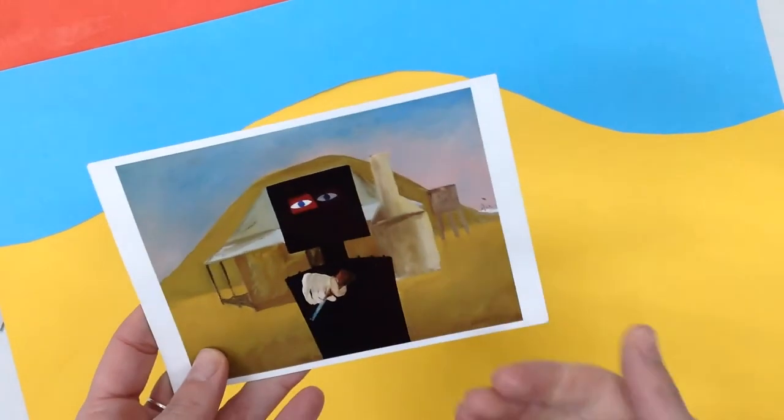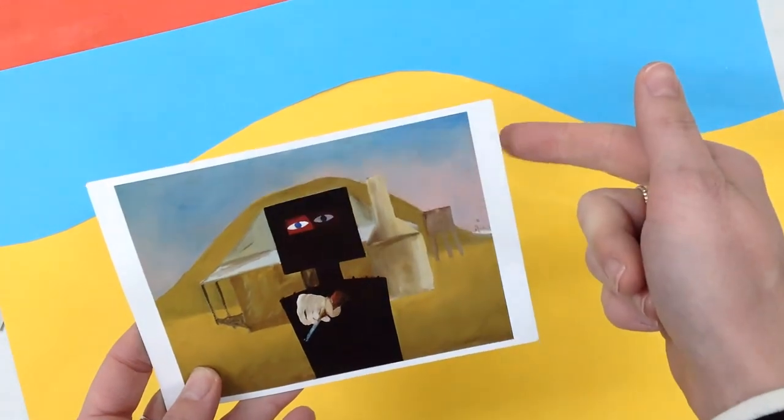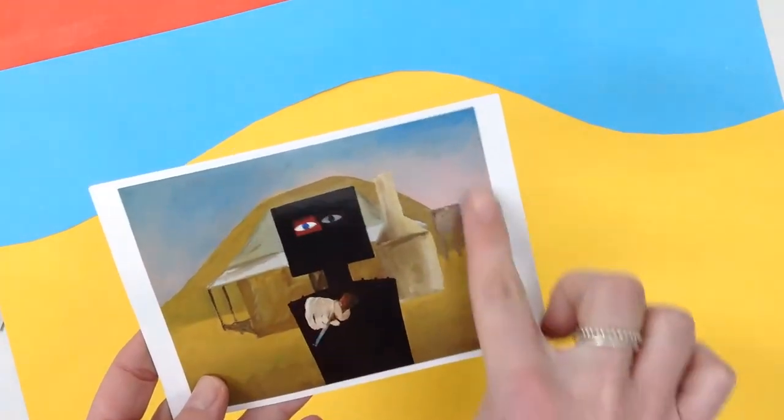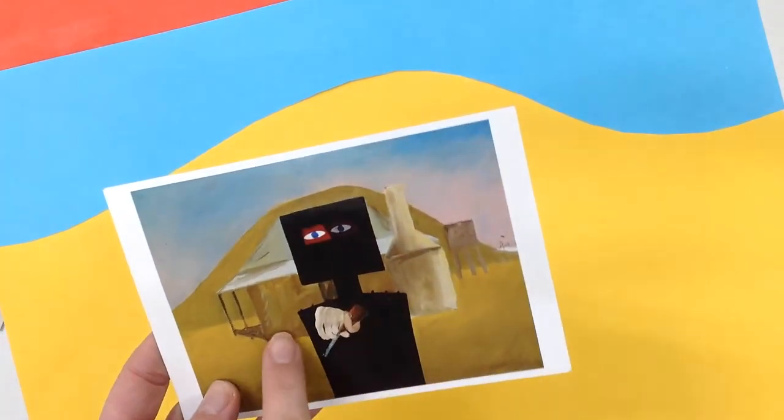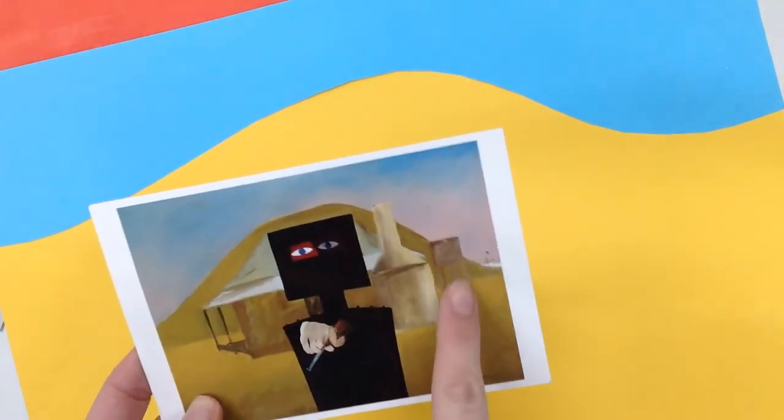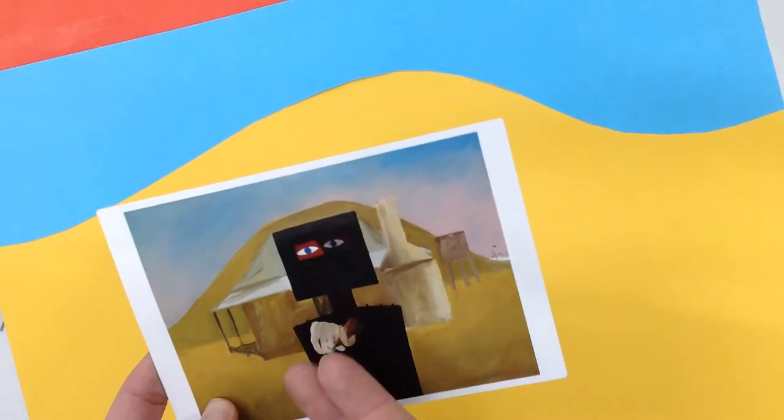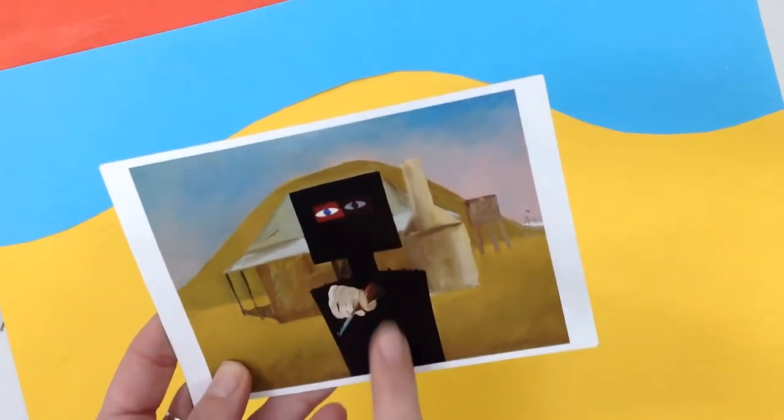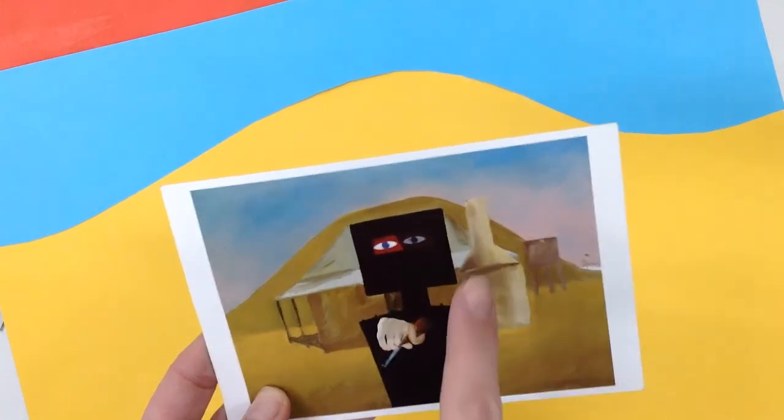Now what I need to think about next is the next layer. I've created my background, now I need to think about my mid-ground, so what's happening in the middle of my artwork. In fact it is this house and this water tank here. And what's in the foreground, so at the very front of my artwork, is Ned Kelly himself.